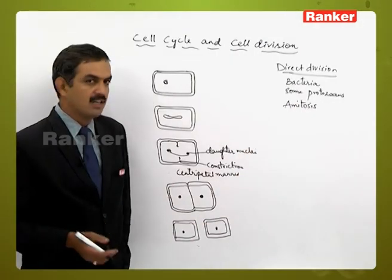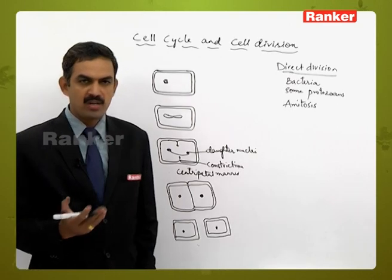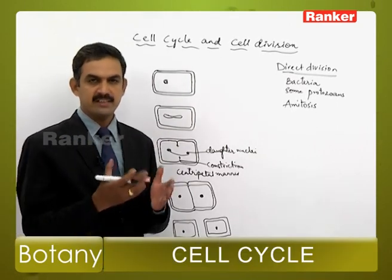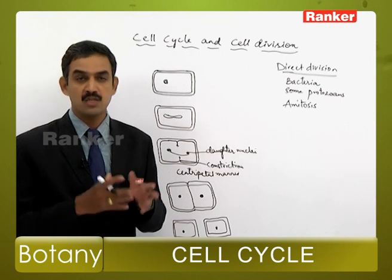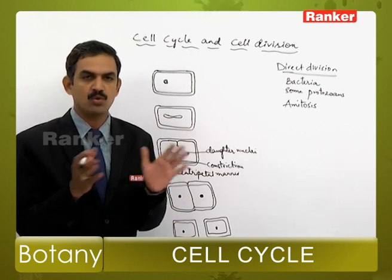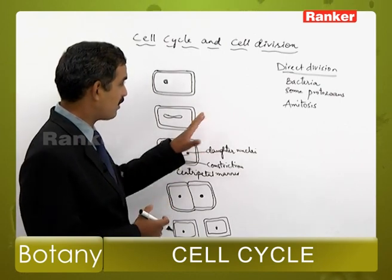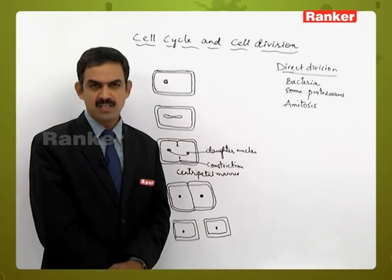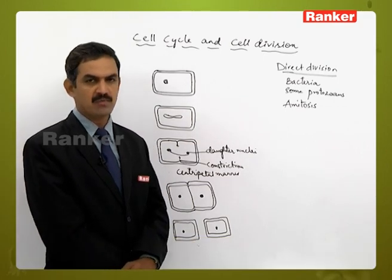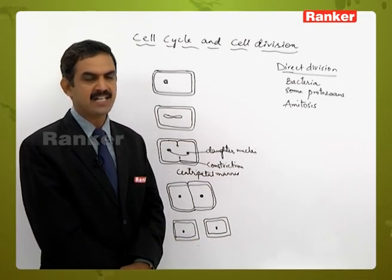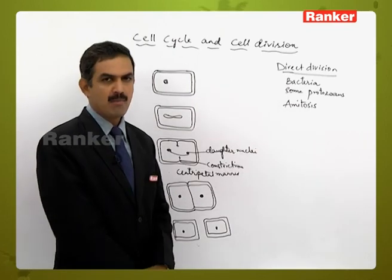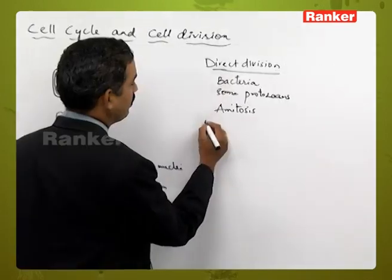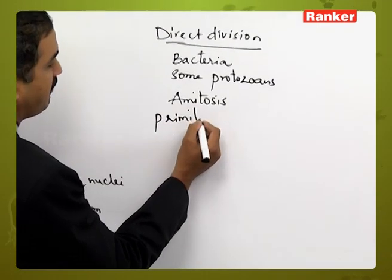In summary, the nucleus is first elongated and divided, then the cytoplasmic contents are distributed between the two daughter organisms. This type of division, where there is no spindle formation and the nucleus divides directly, is called a direct type of division or amitosis, and is considered to be the primitive type of division.